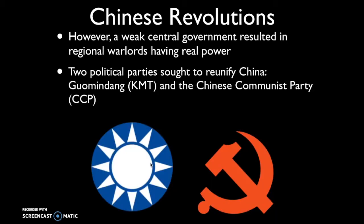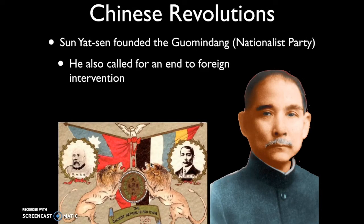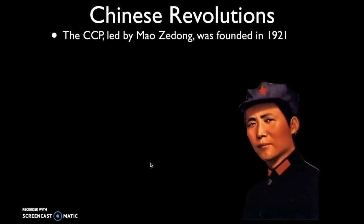There are two political parties that emerge seeking to reunify China: the Guomindang, or the KMT, and the Chinese Communist Party, the CCP. The Guomindang was founded by Sun Yat-sen and was a nationalist party. Much like the Boxers, the nationalists wanted to end any type of foreign intervention in China. The CCP was led by Mao Zedong, founded in 1921, and sought to address the vast inequality between wealthy landholders and poor peasants.